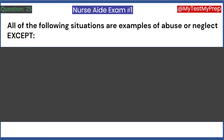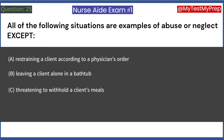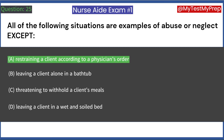All of the following situations are examples of abuse or neglect except: A. Restraining a client according to a physician's order. B. Leaving a client alone in a bathtub. C. Threatening to withhold a client's meals. D. Leaving a client in a wet and soiled bed. Answer: A. Restraining a client according to a physician's order.